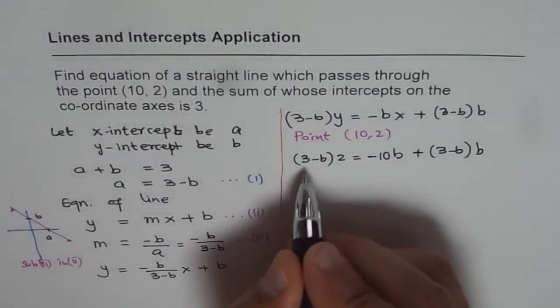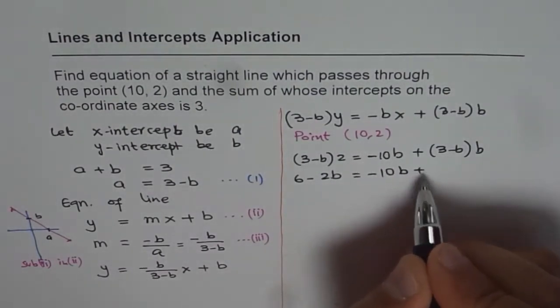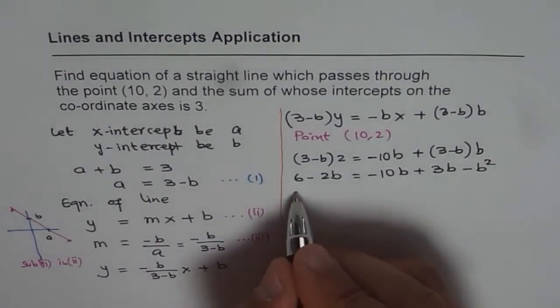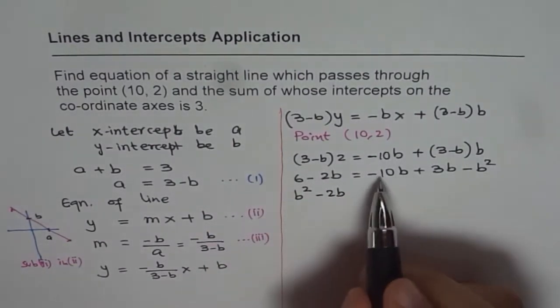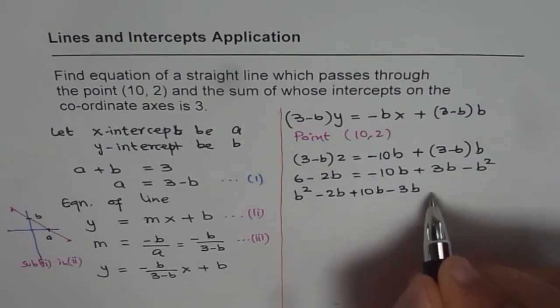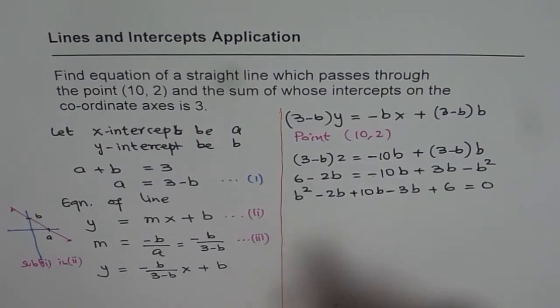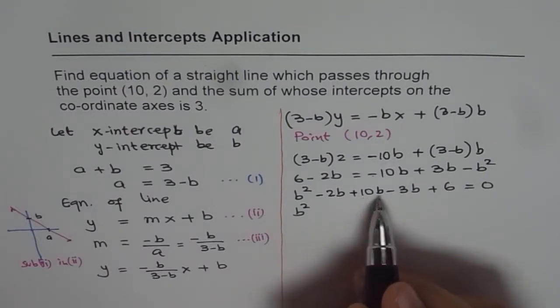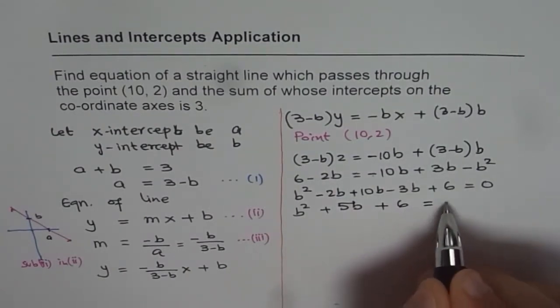Let us open the bracket. We get 2 times 3 is 6 - 2B = -10B + 3B - B². Bring them together. We get B² and -2B - 10. Let us bring them all together here first and then we will combine the like terms. We have brought all the terms to the left side. Now, we will combine the like terms. -2B + 10B is 8B, then 3B is 11B... we get B² + 5B + 6 = 0.